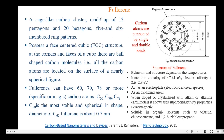Fullerene is composed of 60 carbon atoms. It is a cage-like carbon cluster made up of 12 pentagons and 20 hexagons, having five and six membered ring patterns. The carbon atoms are connected by single or double bonds. Fullerene possesses a face-centered cubic structure — at the corners and faces of the cube there are ball-shaped carbon molecules, with all carbon atoms located on the surface of a nearly spherical figure. Fullerene can have 60, 70, 78, or more carbon atoms, named as C60, C70, and C78.